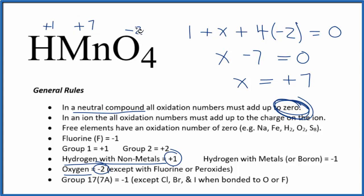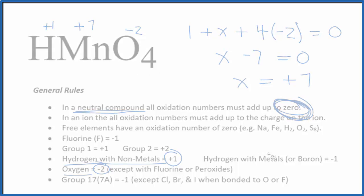If we add these up, four times minus two is minus eight, plus seven, plus one. That gives us zero, because we have a neutral compound here in HMnO4. This is Dr. B, and thanks for watching.